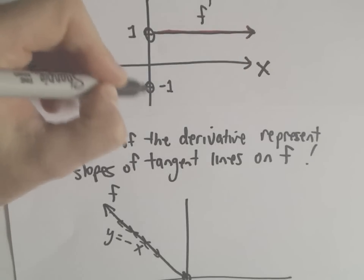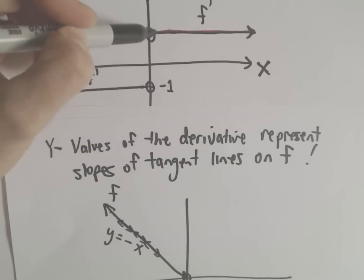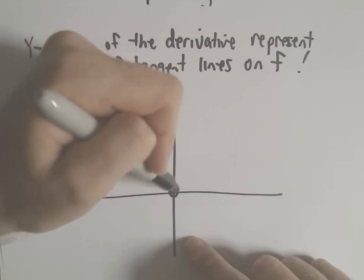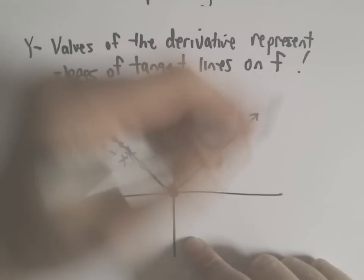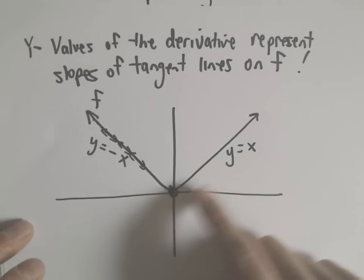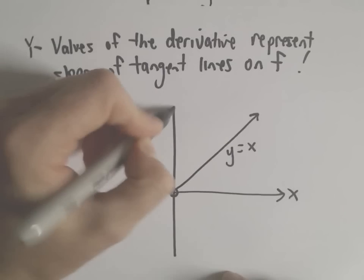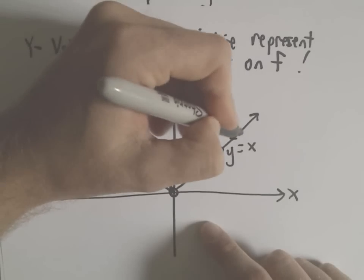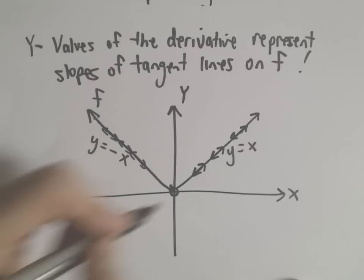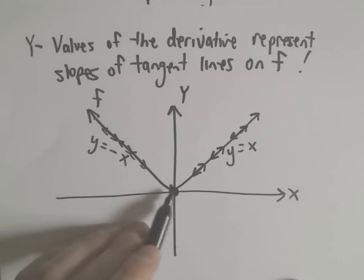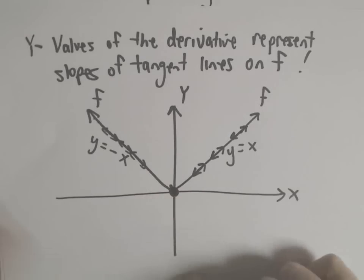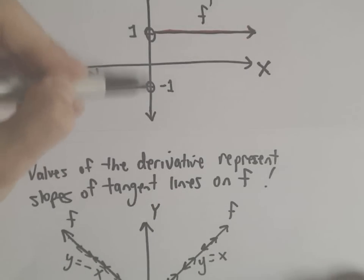After we get past x equals 0 on the derivative graph, the slopes of the tangent lines turn into positive 1. So maybe it would look like the graph y equals x. If you think about the line y equals x, the slopes of the tangent line at any point are always equal to positive 1. I can even shade in that point, because at sharp points — what we call a cusp — the derivative does not exist. Notice on my derivative graph there's no value of the derivative at x equals 0; it's open on both sides.